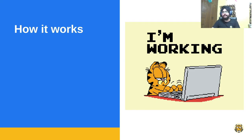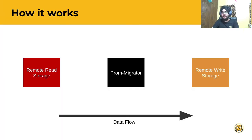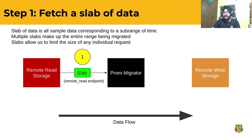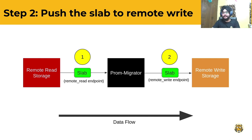Let's see how it works. Consider a scenario where you want to pull data from the storage on the left to that on the right. PromMigrator pulls data in the form of consecutive slabs. Each slab contains data in the form of a time range. This time range increases with consecutive slabs by a minute. After pulling a slab, PromMigrator pushes it to the storage on the right, and at the same time pulls the next slab from the storage on the left. This is how data migration works in PromMigrator.